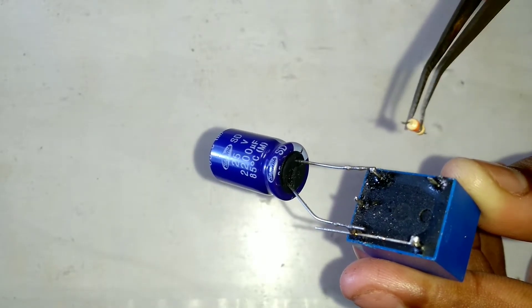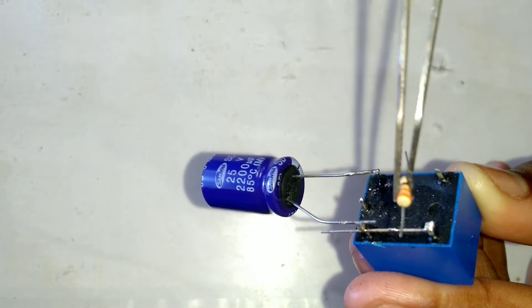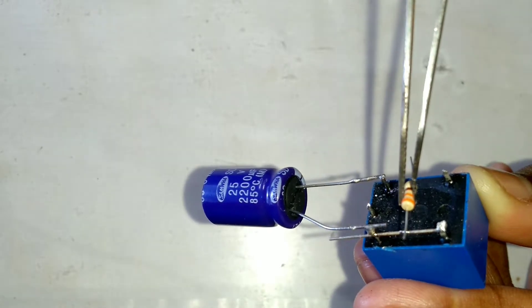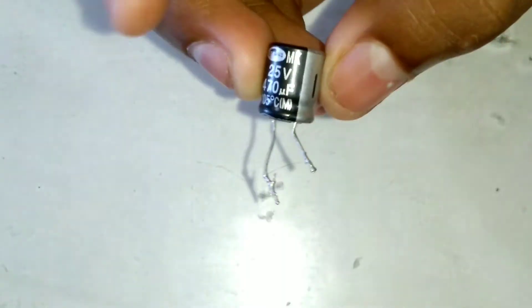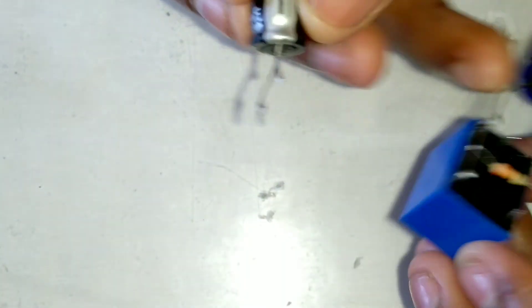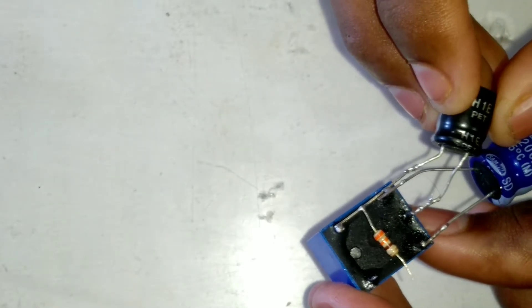We have a 600 microfarad capacitor. The capacitor negative goes to Coil Number 2, and positive goes to Coil Number 2.